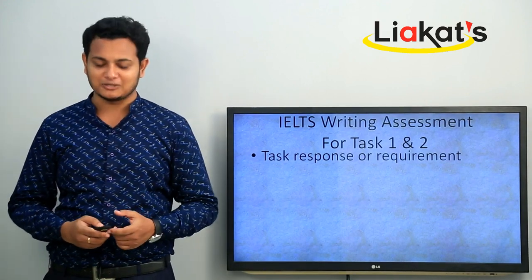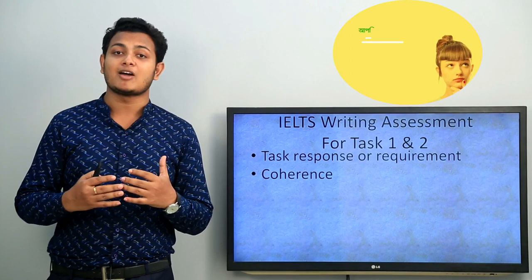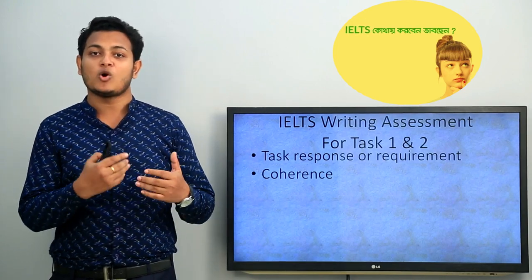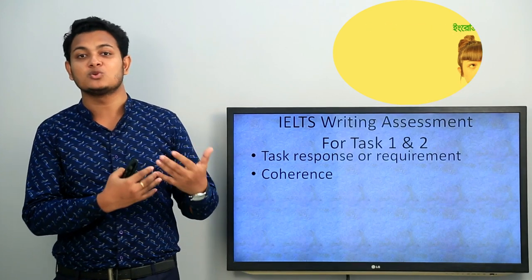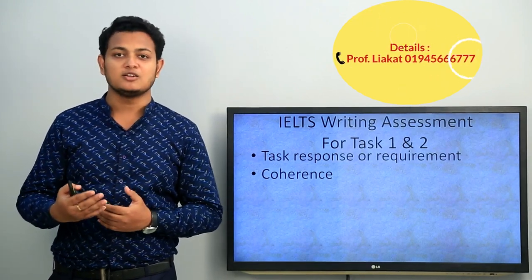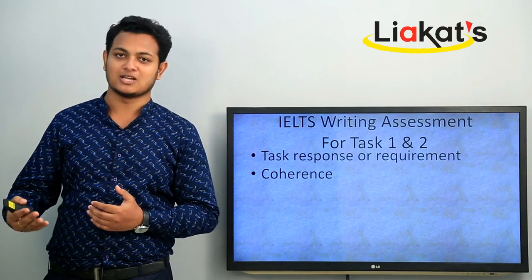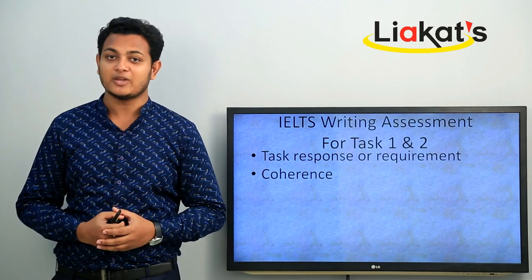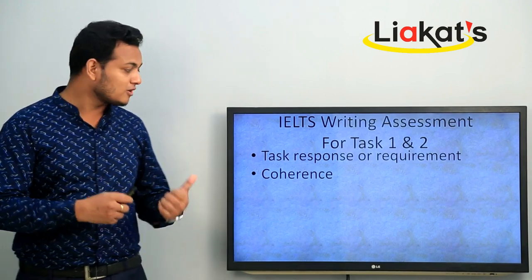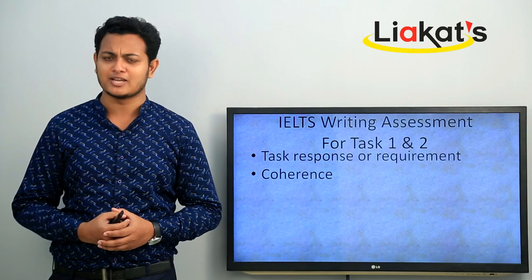The second factor the examiner checks is coherence — how your writing is organized. Your writing should be chronologically organized with clear paragraphs. For Task 2, for example: introduction, body paragraph one, body paragraph two, and conclusion. Linking words and different kinds of linkers are really important for the writing module.